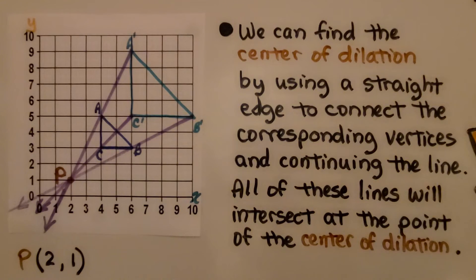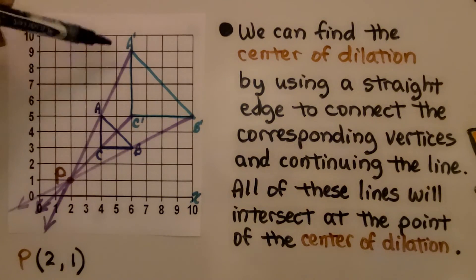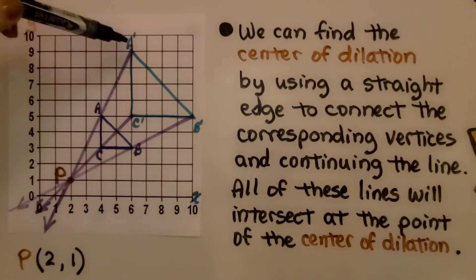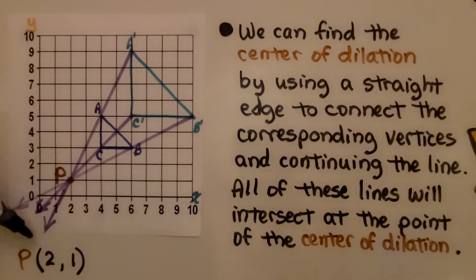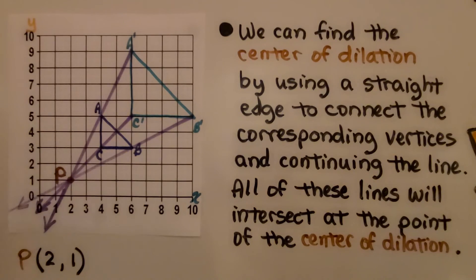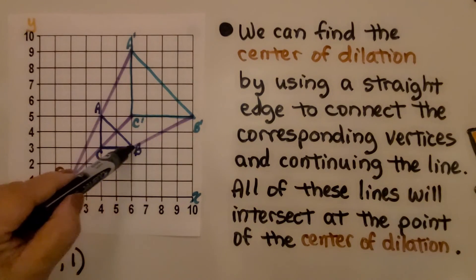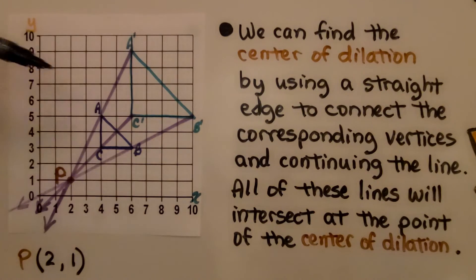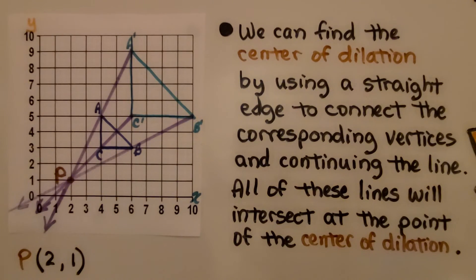We can find the center of dilation by using a straight edge to connect corresponding vertices and continuing the line way past the preimage or the image. Here we connect A and A', B and B', and C and C', extending each line. All of the lines will intersect at the center of dilation. For this diagram, the center of dilation is at (2, 1).